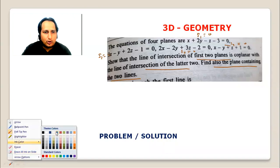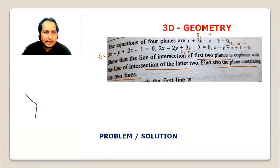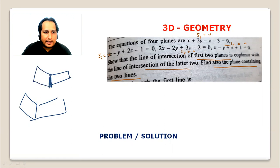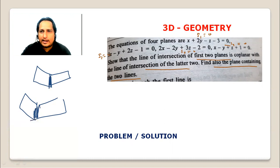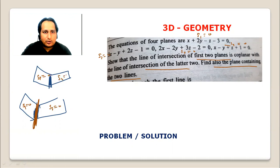So we have two lines: the line of intersection of the first two planes and the line of intersection of the other two planes. We need to show these lines are coplanar. The best way to solve this is to use the family of planes: s1 plus lambda s2 equals 0, and s3 plus mu s4 equals 0.